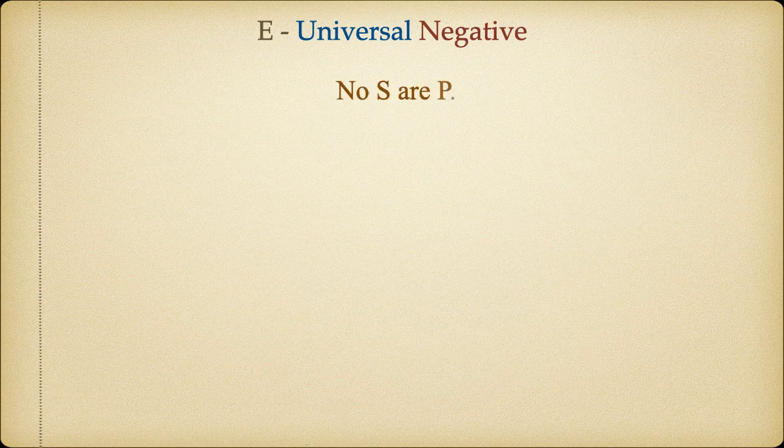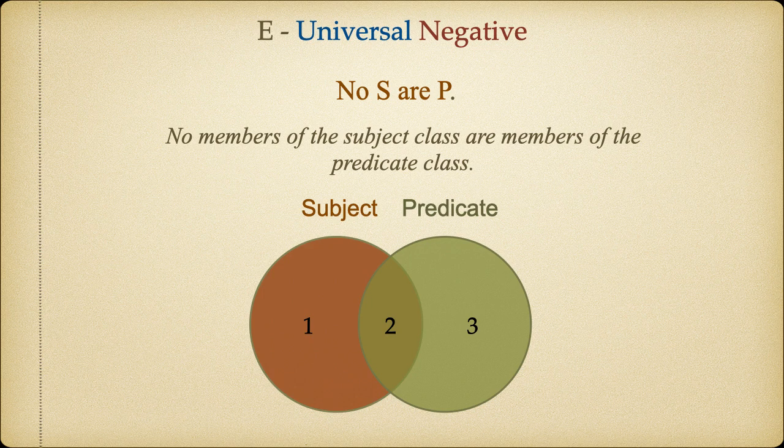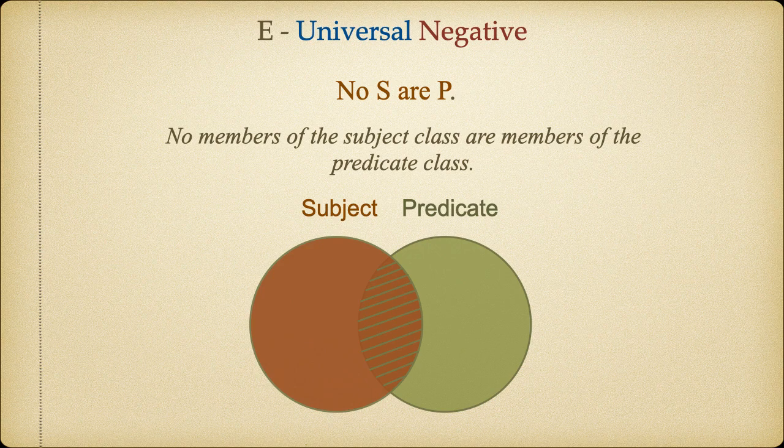Now let's try the same thing for the universal negative. It asserts that there are no members in common between the subject and predicate classes. No S are P. This is indicated on the diagram by shading out Region 2. Now we can see that none of the members of the subject class are also members of the predicate class, which is exactly what no S are P means.